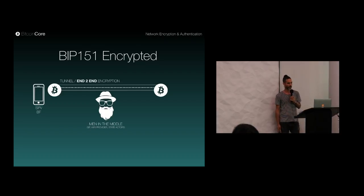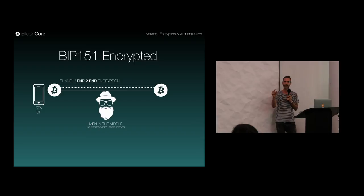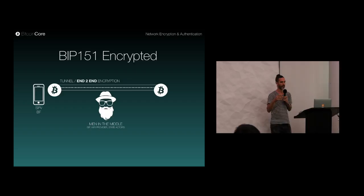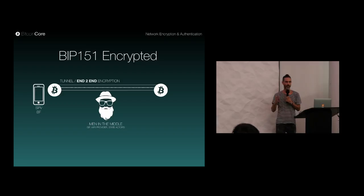That's why BIP 151 was proposed. It's a community proposal, and it allows creating secure channels between peers. It doesn't provide full man-in-the-middle protection — you're still connecting to peers, and if the peer is malicious you don't know — but at least network authorities no longer have the possibility to intercept or manipulate messages undetected.